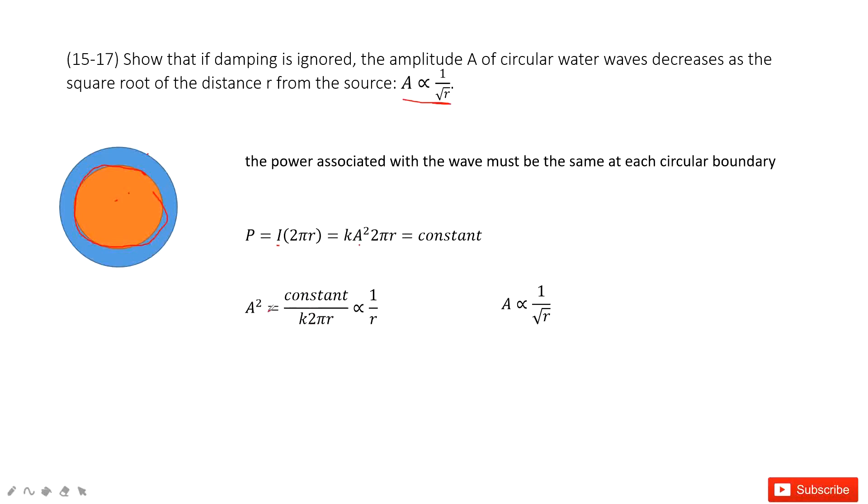So we find that A squared is proportional to 1 over r. So that makes A proportional to 1 over square root of r.